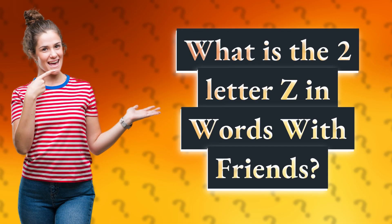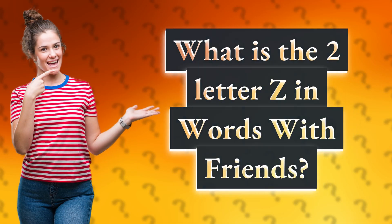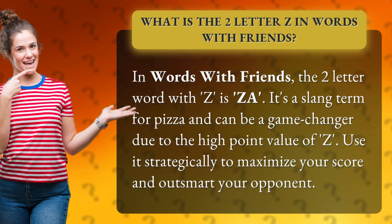What is the two-letter Z in Words with Friends? In Words with Friends, the two-letter word with Z is ZA. It's a slang term for pizza and can be a game changer due to the high point value of Z. Use it strategically to maximize your score and outsmart your opponent.